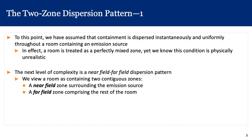In the well-mixed room model, we have been assuming that the contaminant is dispersed instantaneously and uniformly throughout a room containing an emission source, and we assume that this room is perfectly mixed, even though we know that this is a physically unrealistic assumption. What we are going to do in this next model is add a little bit more complexity — viewing the same room as containing two zones: a near-field zone surrounding the emission source and a far-field zone comprising the rest of the room.